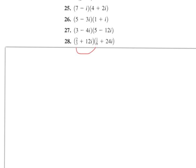Next up, number 28. These are multiplying, so we're going to do a full FOIL. First times first: two-thirds times one-sixth — we can cross-cancel and get one-ninth. Then two-thirds times 24i — we can cross-cancel and get eight, so that's 16i.